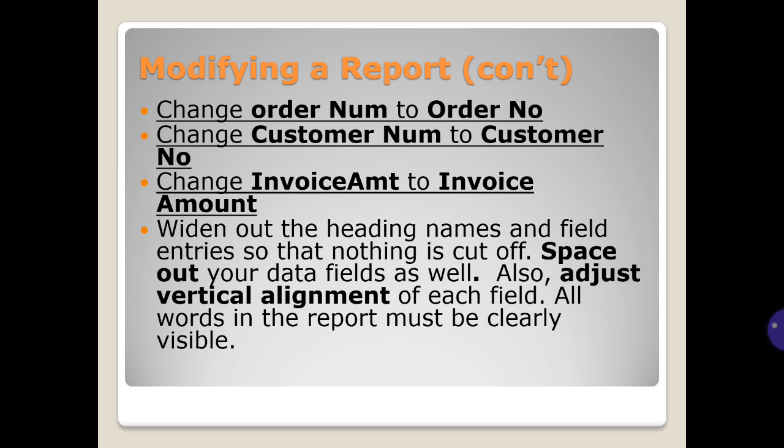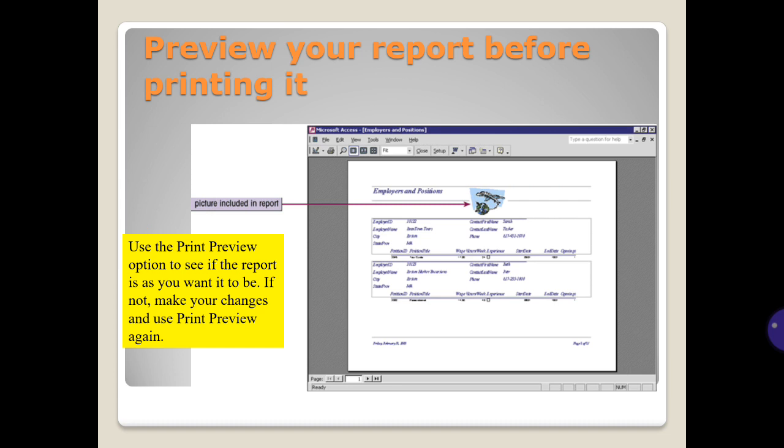Widen the heading names and fields so that nothing is cut off. Space out your data fields as well, and adjust the vertical alignment of each field. All words in the report must be clearly visible. Preview your report before printing using the print preview option to see if the report appears as desired; if not, make your changes and use print preview again.